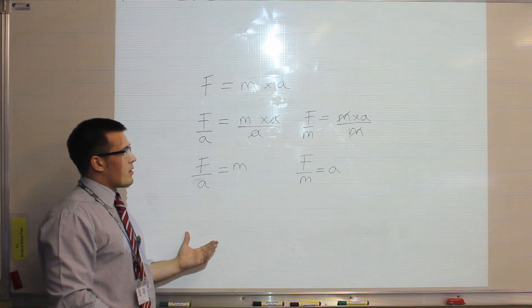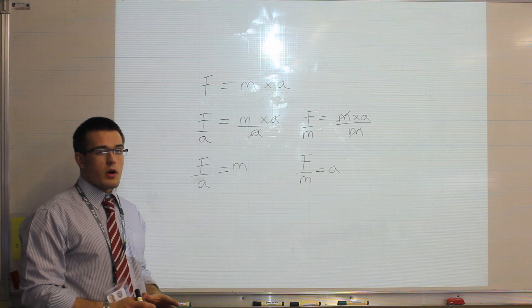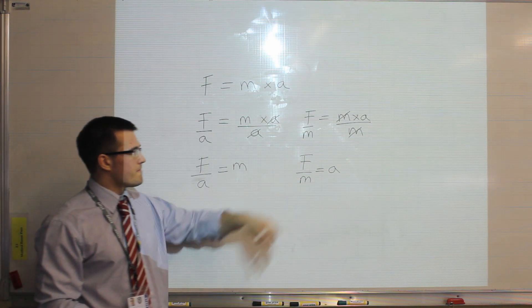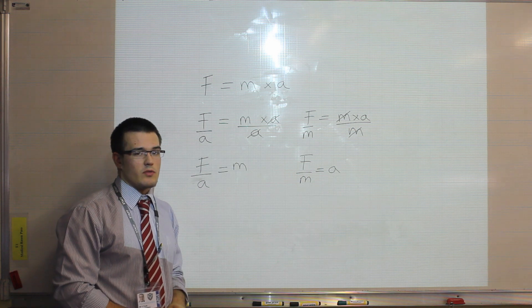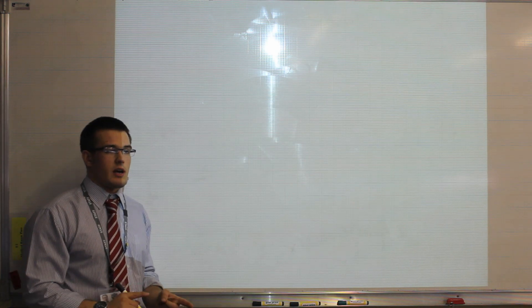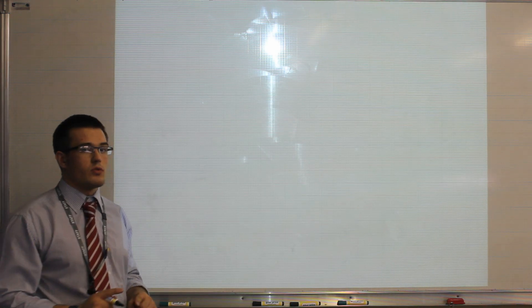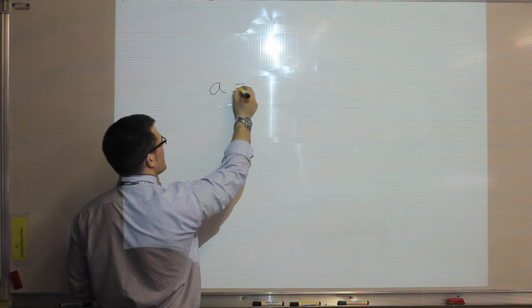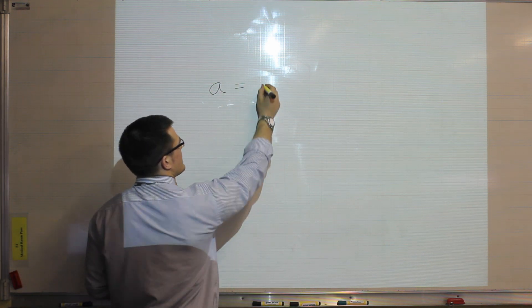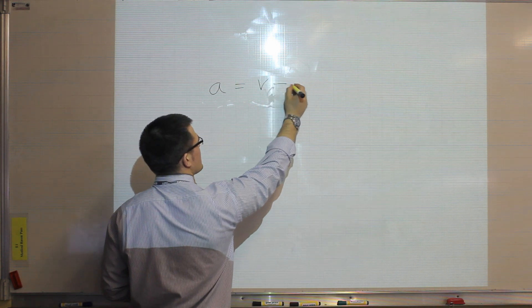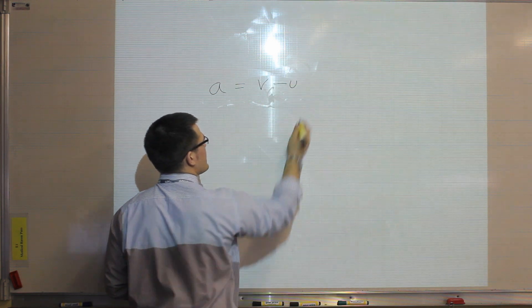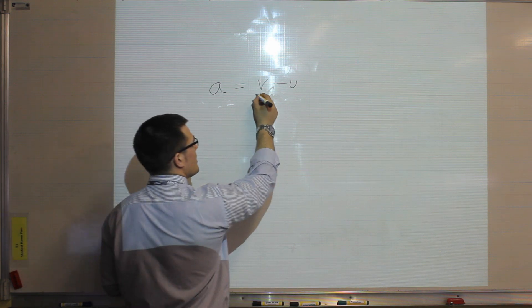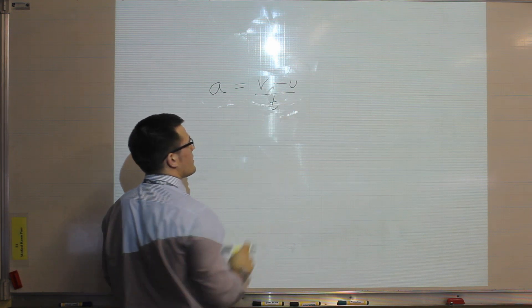Now that approach will work for most formulas with three components in it. Let's have a look at another one. The equation for acceleration is the change in speed — which is the final speed take away the initial speed, so the speed you end at take away the speed you start at — divided by time.